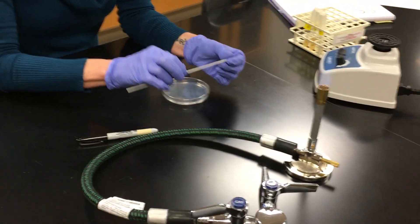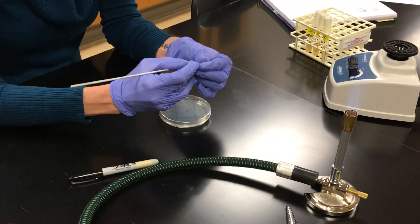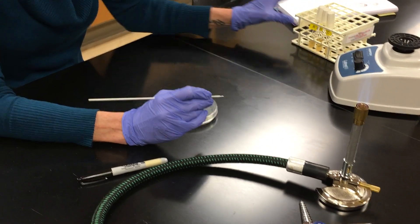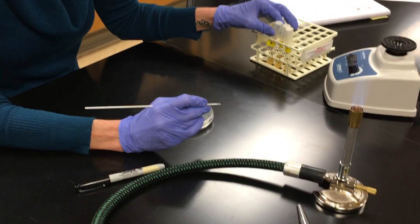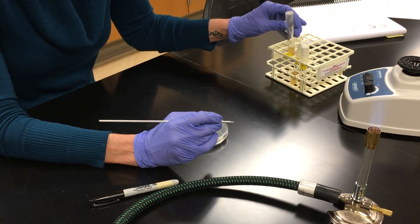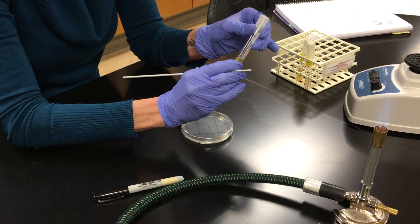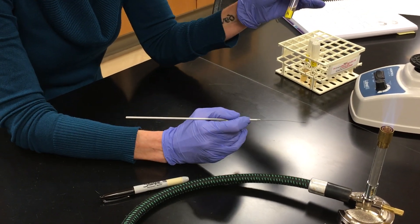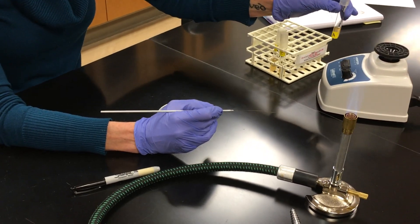You want to take your loop in your dominant hand and you want to hold it just like a pencil. So we're going to do that. We are going to take our culture tube. Oh, my little label came off, but that's okay. It's still culture tube A. And we're going to go and we want to mix these. And so that's what the vortex is for.